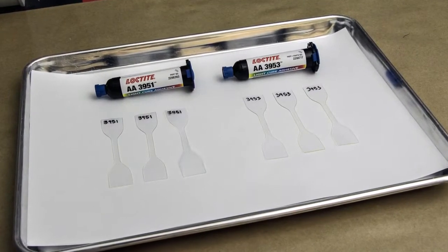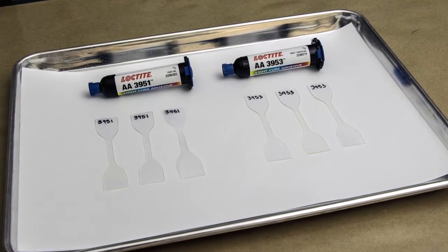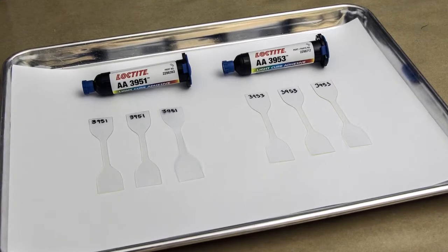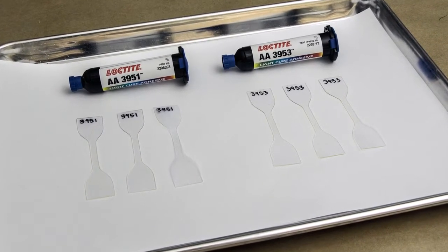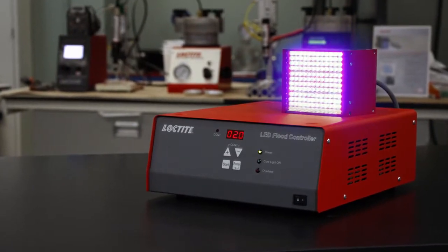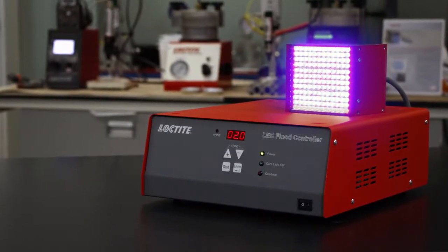Cured samples of specified dimension called dog bones due to their shape were prepared using Loctite Highly Flexible Light Cure Acrylic Adhesives and cured with a Loctite CL30 LED flood system.